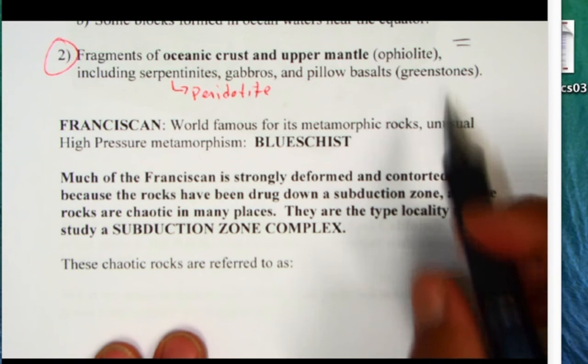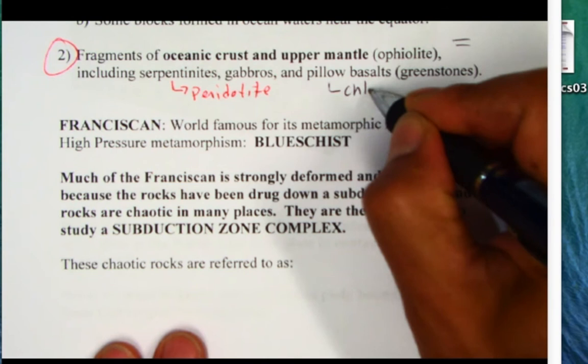The pillow basalts look green because of green minerals and primarily it's chlorite and the mineral actinolite.